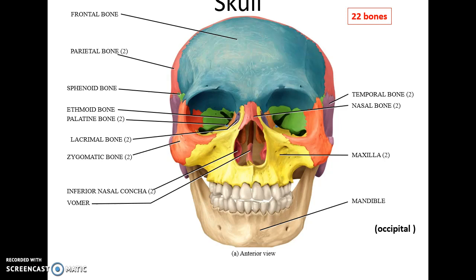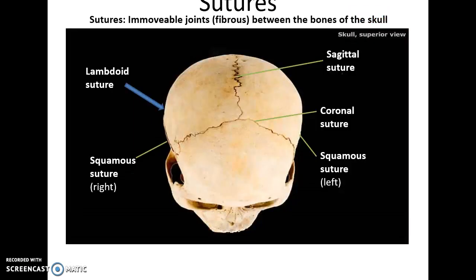The 22 bones of the skull — our skull is not color coded. When two bones come together in the skull they form an immovable joint called a fibrous joint; in the skull these are referred to as sutures. The ones you need to know include: the sagittal suture between the two parietal bones; the coronal suture between the parietal bones and the frontal bone; the lambdoid suture between the parietal bones and the occipital bone; and on either side, the squamous suture between the temporal bone and the parietal bones.